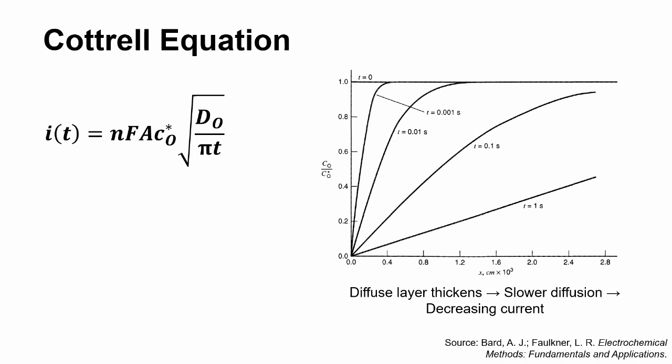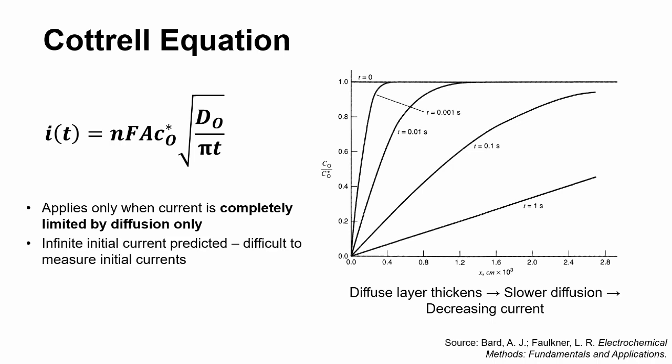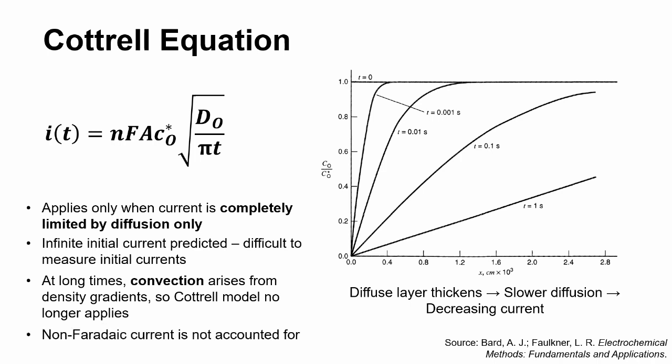However, the Cottrell equation has a few limitations. First, it may only be applied to diffusion-limited current, and it predicts an infinite initial current, which is practically difficult to measure. Also, over time, convection will arise, which will break down the diffusion-limitation assumption, rendering the Cottrell equation invalid. Finally, non-Faradaic current, such as double-layer charging, is not considered.